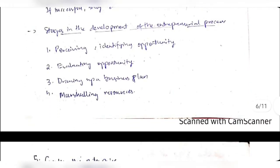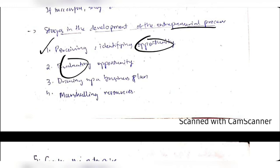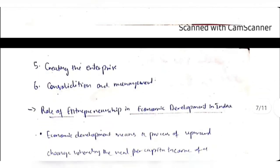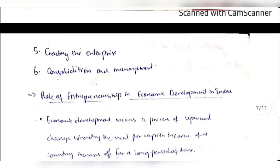The stages of the entrepreneurial process are: perceiving and identifying an opportunity, evaluating if it's possible to make a product out of it, drawing up a business plan, gathering the resources, creating an enterprise, and then carrying out the management process.